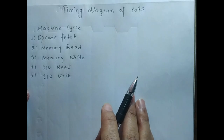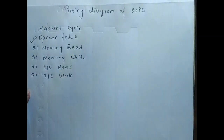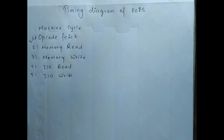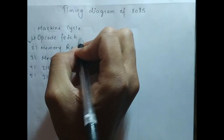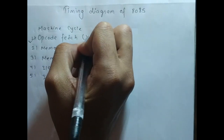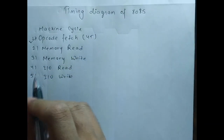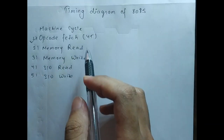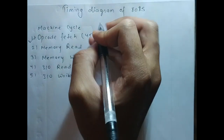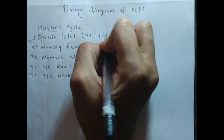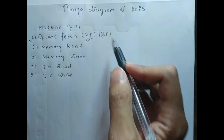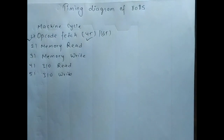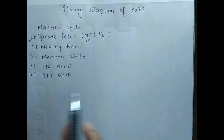In today's video we'll learn how to draw the timing diagram for opcode fetch. Opcode fetch is the first machine cycle of any instruction. It consists of 4 T-states. Some instructions like CALL consist of 6 T-states, but for now we'll learn about the 4 T-state case. We'll cover the 6 T-state case in future videos.